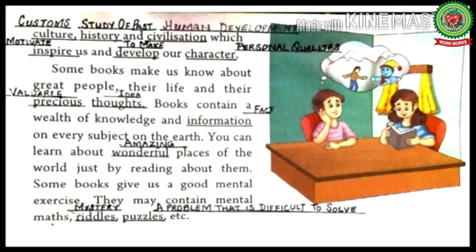Come to the next line. You can learn about wonderful places of the world just by reading about them. Underline 'wonderful' — write down: amazing. Some books provide us knowledge about glorious places of the world. When you read about monuments through various pictures, you feel that you are at the same place.